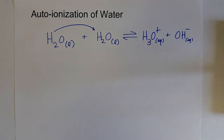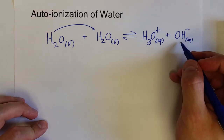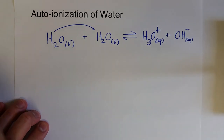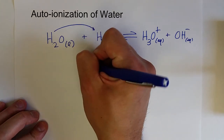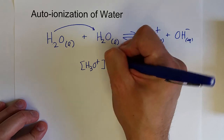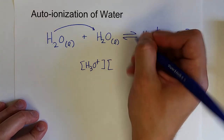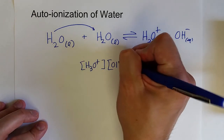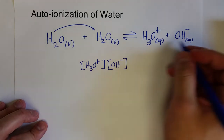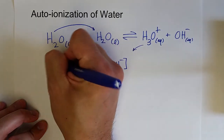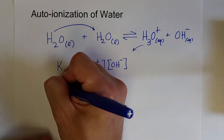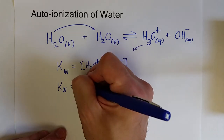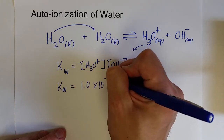This occurs in all water samples — it's occurring in water if you're drinking water right now. The concentrations of hydronium and hydroxide are not very high, and at room temperature the concentrations can be calculated from the fact that the equilibrium constant — remember this is an equilibrium process where the reactions are going back and forth at the same rate — the product of these two concentrations of the products is equal to an equilibrium constant, which we call Kw for water. And Kw is equal to 1.0 times 10 to the negative 14th at room temperature.